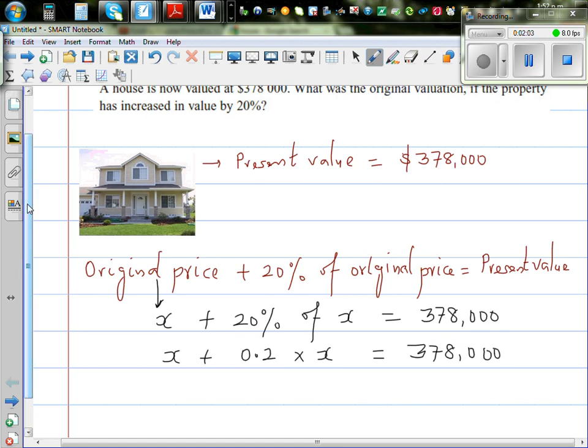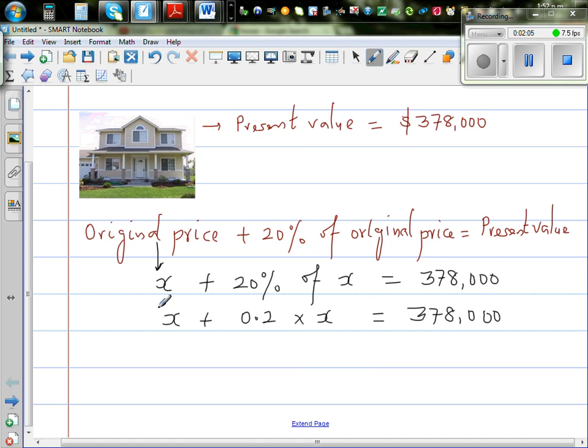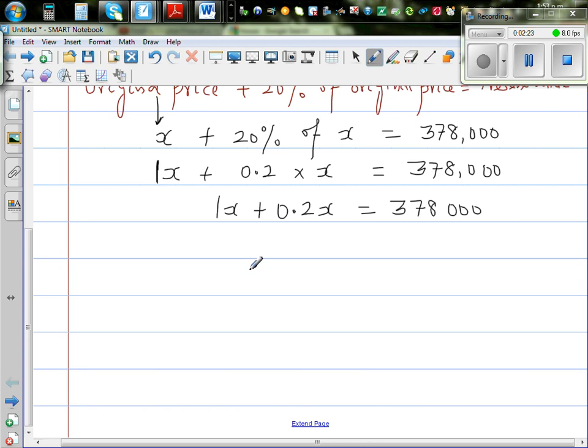This is 1 lot of x plus 0.2x. So 1x plus 0.2x is equal to 378,000. 1x plus 0.2x is 1.2x is equal to 378,000.